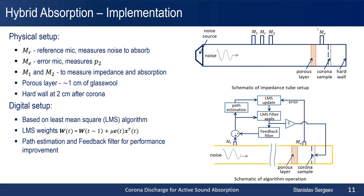The whole setup is implemented in an impedance tube, where at one side there is a noise source and at the other side there is an absorber. As a porous layer, we used 1 cm of glass wool and the hardwall was set 2 cm apart from the corona sample. Microphones MR and ME correspondingly measure the reference noise from the source and the error signal from pressure cancellation. Microphones M1 and M2 are used to measure the absorption coefficient and impedance in front of the porous layer. The pressure cancellation is implemented with a least-mean-square algorithm, where the reference microphone and error microphone update the adaptive filter weights to produce the anti-noise signal played back at the corona sample position. We also included path estimation from the actuator to the error microphone and a feedback signal from the corona sample to the reference microphone.